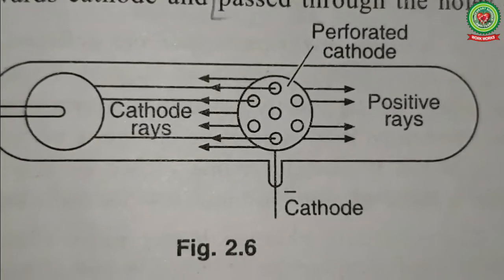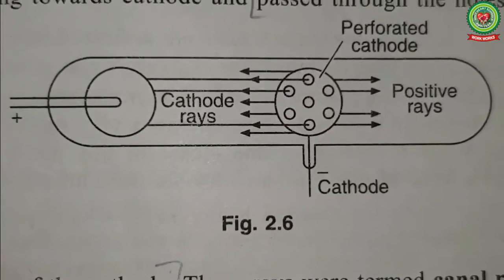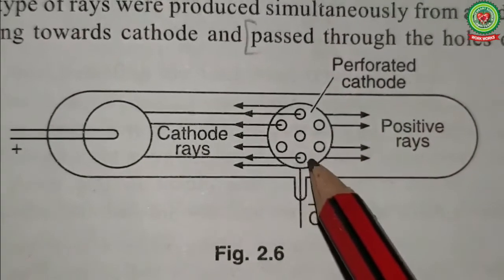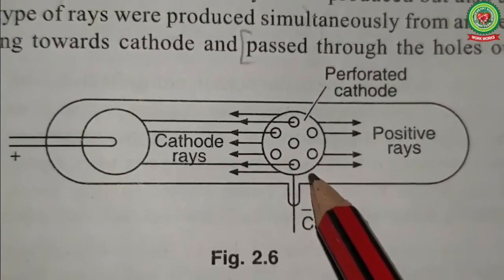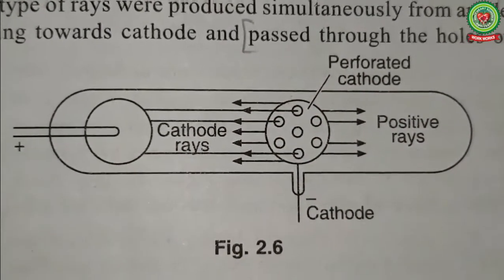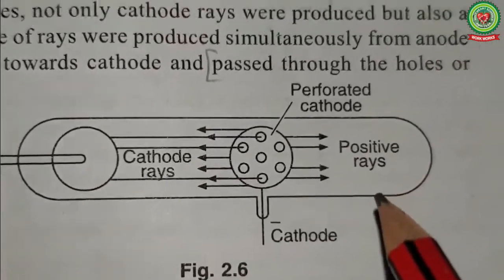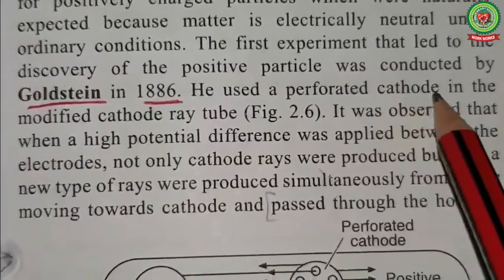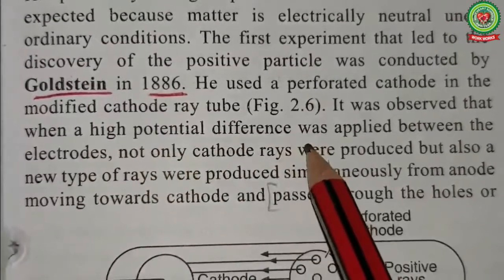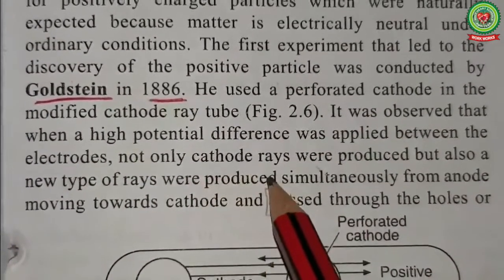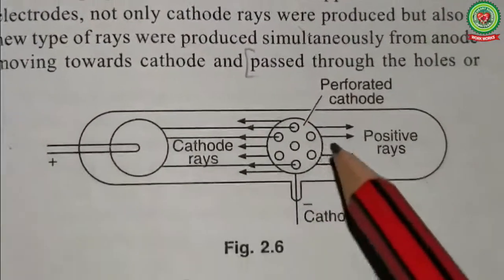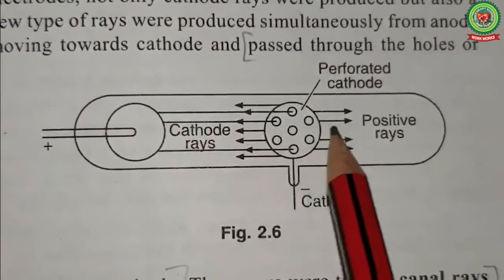The cathode ray tube used was similar to that of the cathode ray experiment, but the only change was that the cathode here was perforated — it had holes in it — so that when rays are moving, they could pass beyond it as well. He used a perforated cathode in the modified cathode ray tube, and it was observed that when a high potential difference was applied, not only cathode rays were produced but there were some other rays also produced from the anode side.